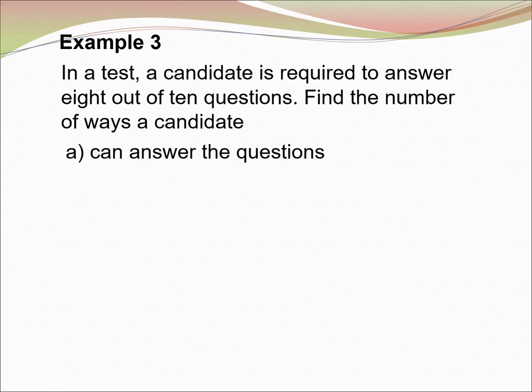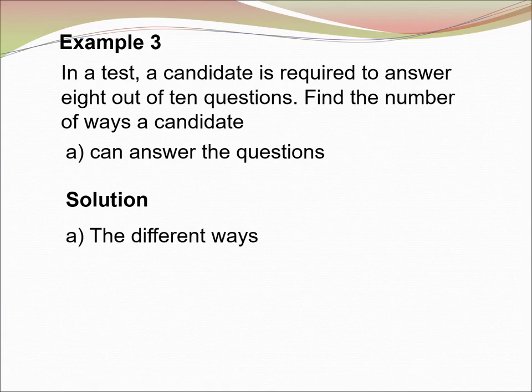Example 3. In a test, a candidate is required to answer 8 out of 10 questions. Find the number of ways a candidate can answer the questions. (a) We have 10 questions and we need to answer 8 questions only. So, the different ways is 10C8 equal to 45.